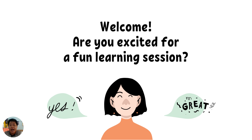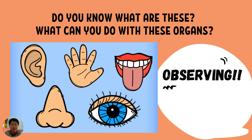So before we continue to our lessons today, let us look at this picture. Did you know what are these? You can see this picture: number one, this is an ear, then this is a hand, then this is mouth or tongue, then this is nose, and this is eye.